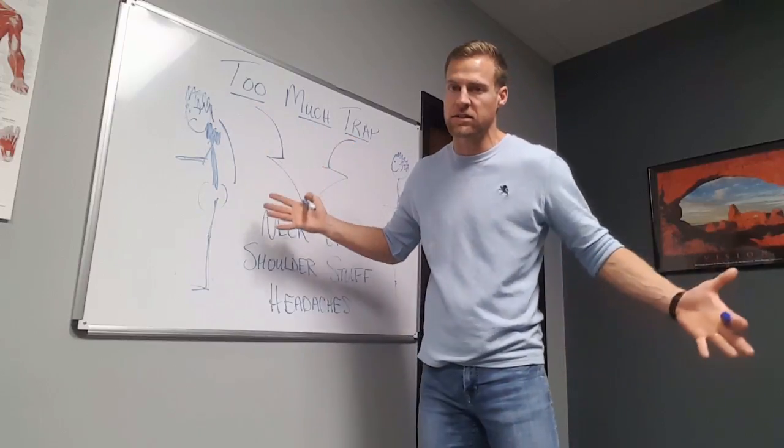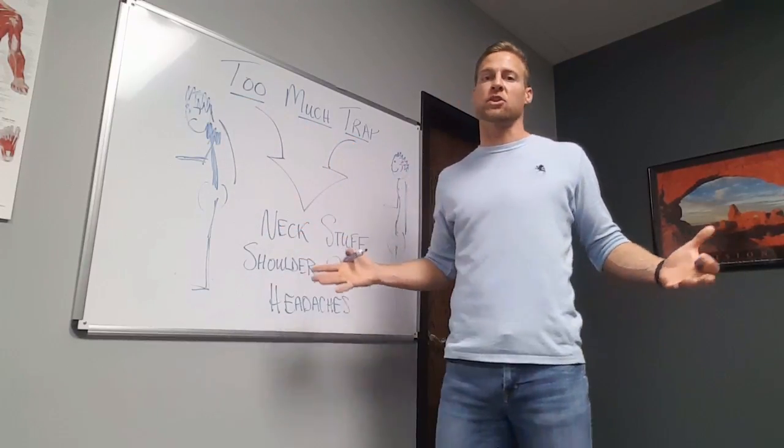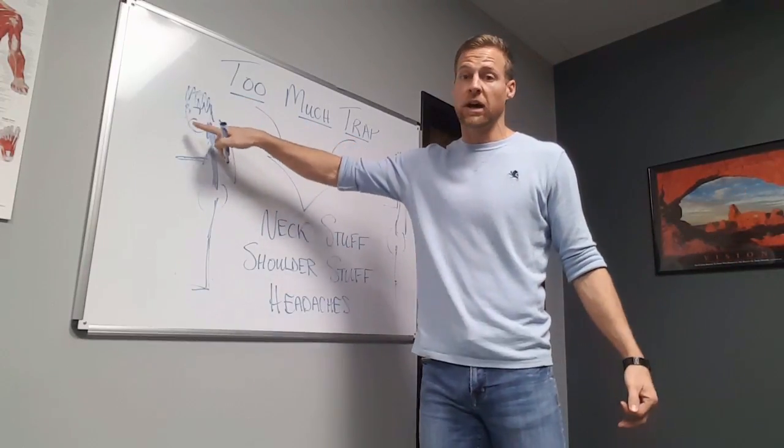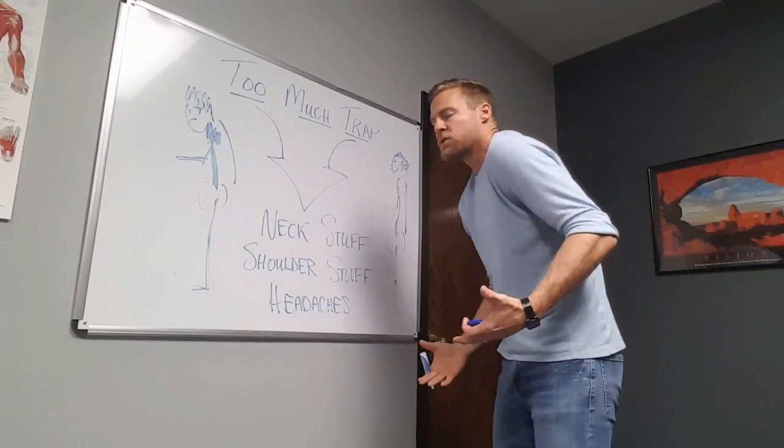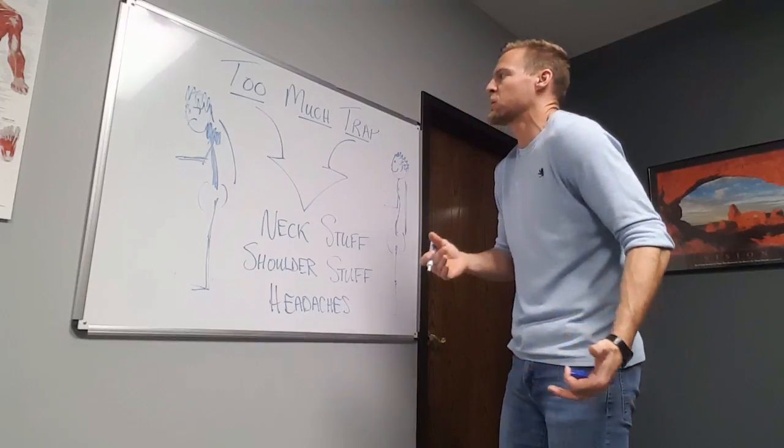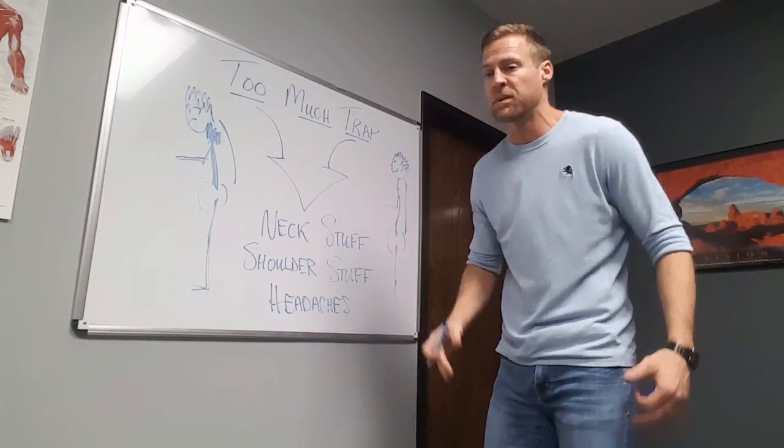this picture right here. You see this guy isn't too happy, even though his hair looks like he has a crown. It doesn't matter—he's still got a frown face and he's crying because he's got too much trap. He's throwing too much tension up into his neck